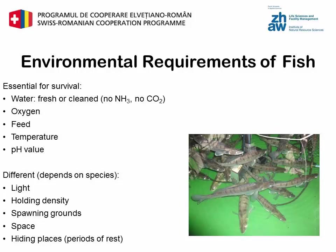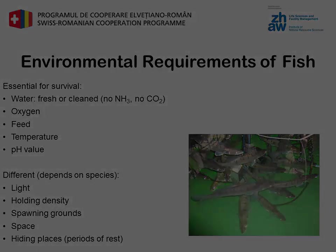We can say that the essential parameters for living and healthy fish in your aquaculture system are: fresh or cleaned water that contains no ammonia or CO2, enough dissolved oxygen, enough feed, and suitable water temperature and pH value. Other factors such as light, holding density, or spawning grounds are less important and vary more between species. You will hear more details about the essential chemical water parameters such as oxygen, pH, and nitrogen compounds in the water chemistry part of module 5, recirculating aquaculture.